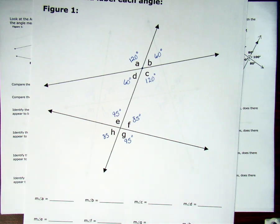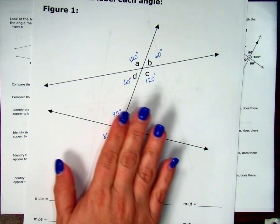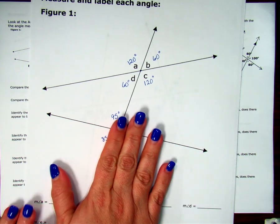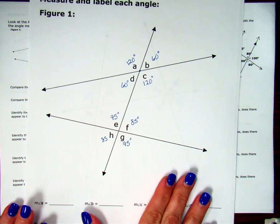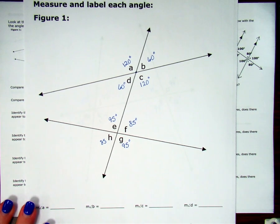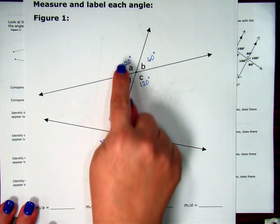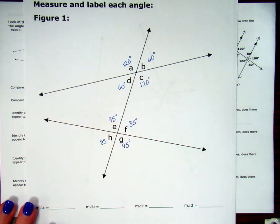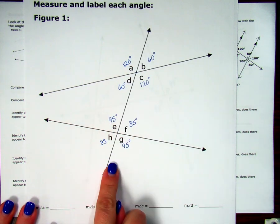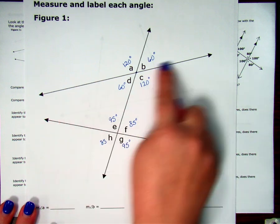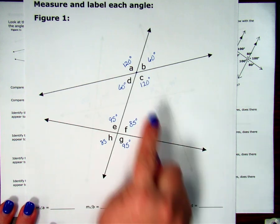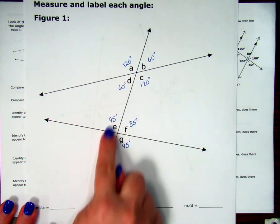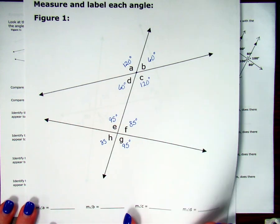Welcome back. In the last video, we practiced measuring angles, so if you don't remember how to use your protractor to measure angles and you skipped that video, you might want to go back and see how we got each of these numbers. I have a transversal crossing two lines, and I went ahead and measured and found all of the angles.